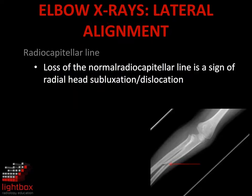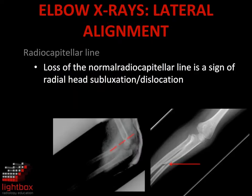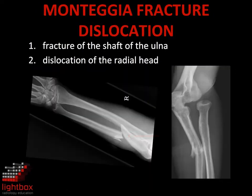Loss of normal orientation on the radiocapitellar line is a sign of radial head subluxation or dislocation. This is a commonly seen association with a fracture of the ulna. This combination has been named Monteggia fracture dislocation.